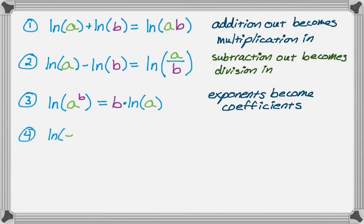The next rule I use a lot: the natural log of E is 1. The base of the natural log is E, so it's the log of E in base E equals 1. More generally, the log of A in base A is equal to 1. This is a really important property, especially in combination with the exponents-become-coefficients property.